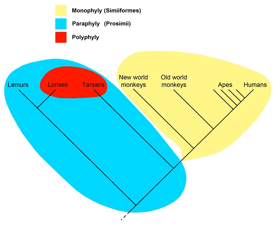Conversely, the term polyphyletic builds on the ancient Greek prefix polys, meaning many, a lot of, and refers to the fact that a polyphyletic group includes organisms arising from multiple ancestral sources.